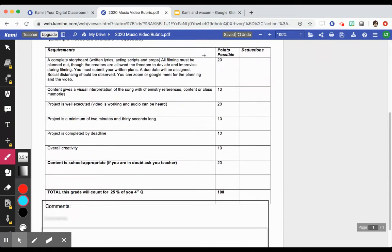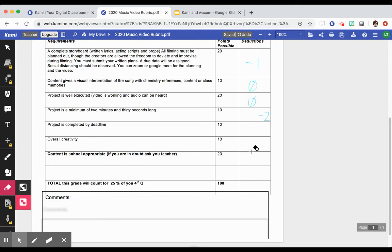I can go through and enter the possible points for the total here and put my deductions. This complete storyboard section, I'm going to say was a minus one. The content and visual interpretation has no deduction. Project is well executed, no deduction. The project was short, so maybe the person gets a minus two. You can get the picture here. My total deductions were minus three, which means the grade was a 97.